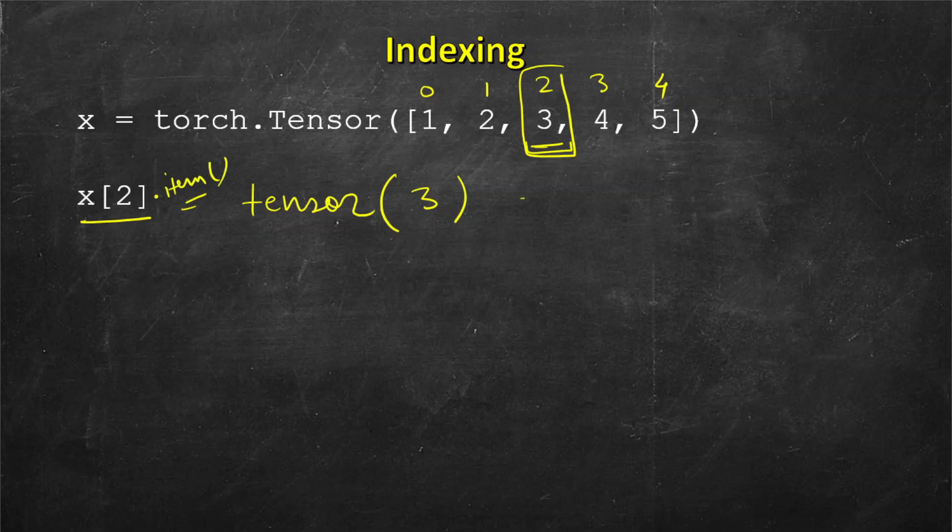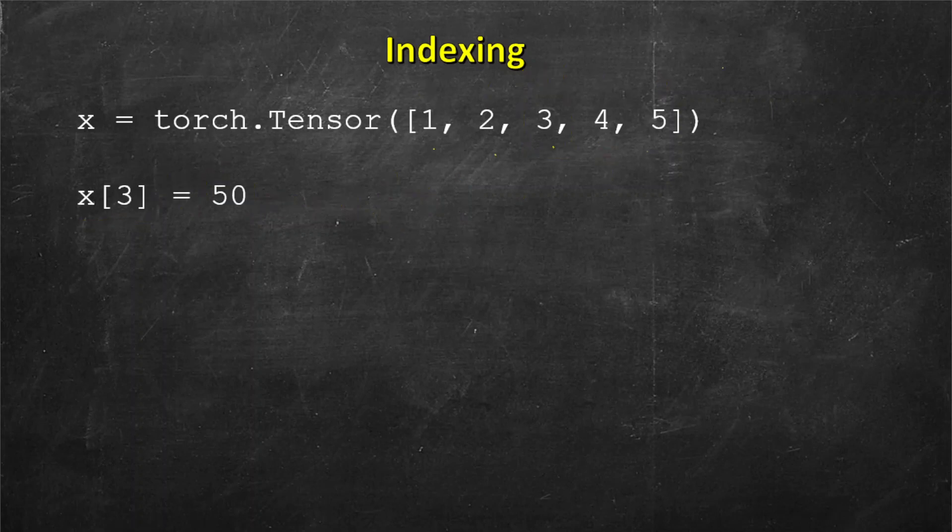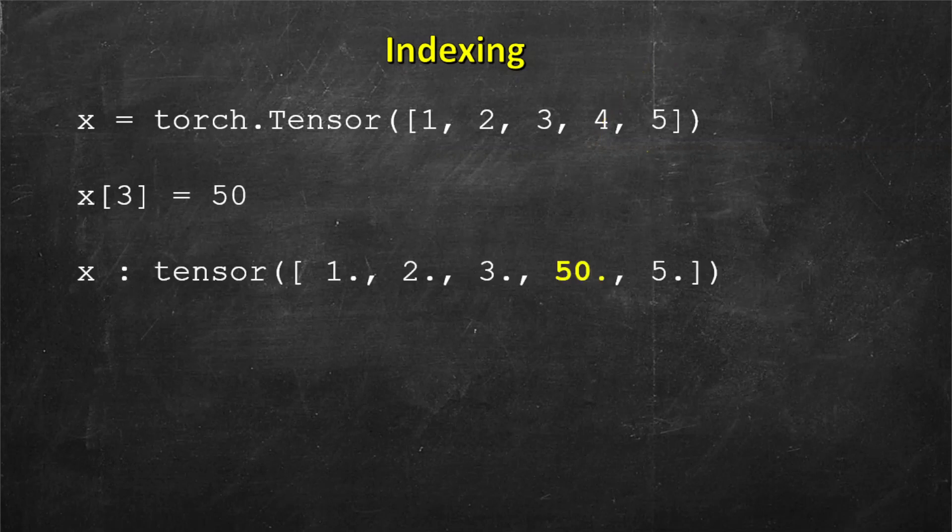Now we can access the value and we can also modify it. If we have to modify, let's say this fourth element, we can write x[3] equal to 50. So this 4 will be replaced with 50, and you can verify it by printing this x.